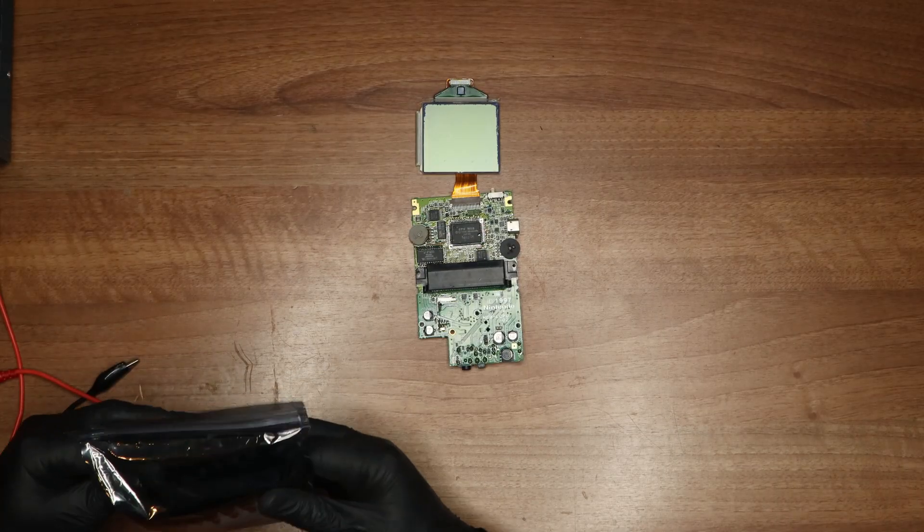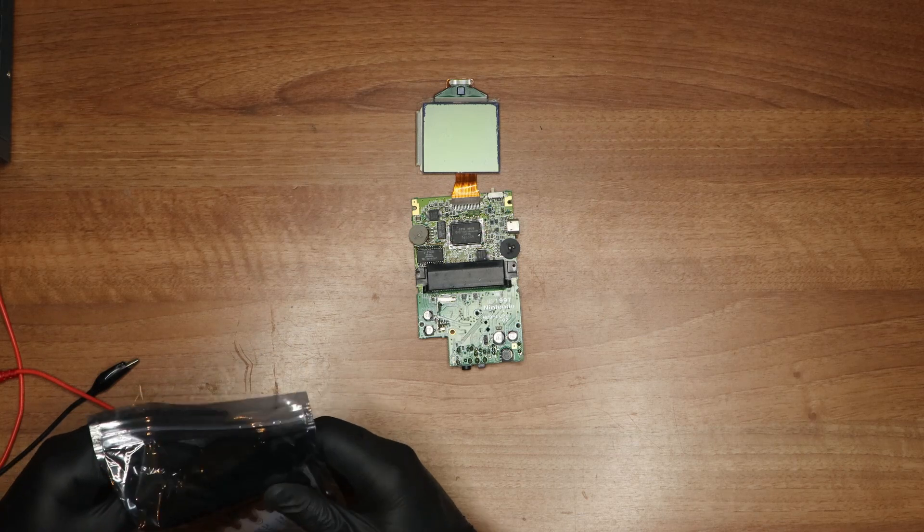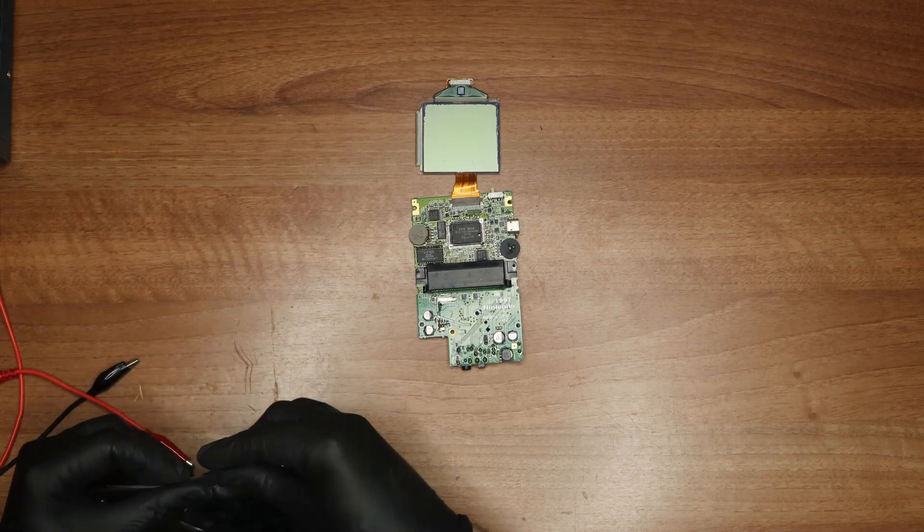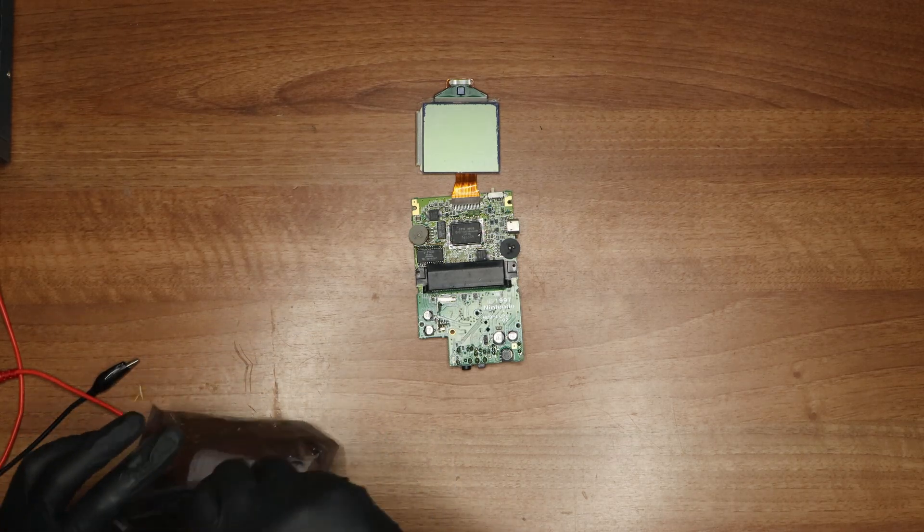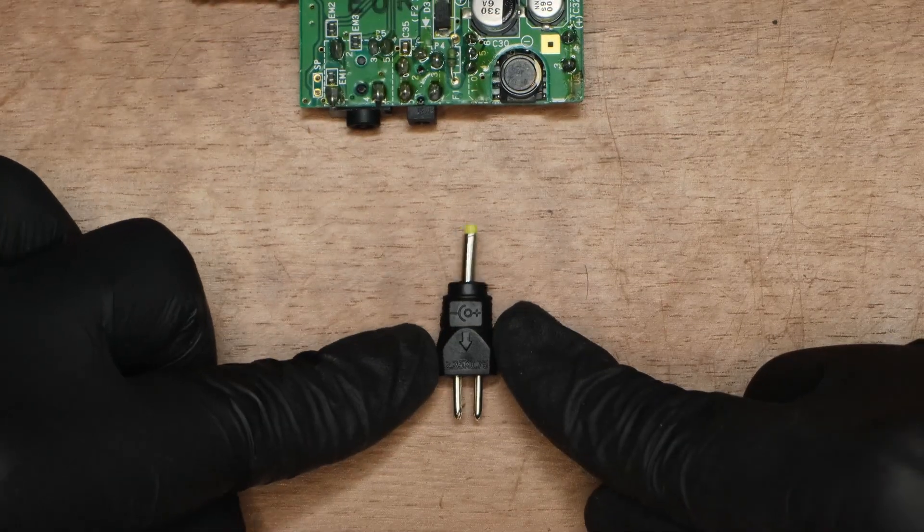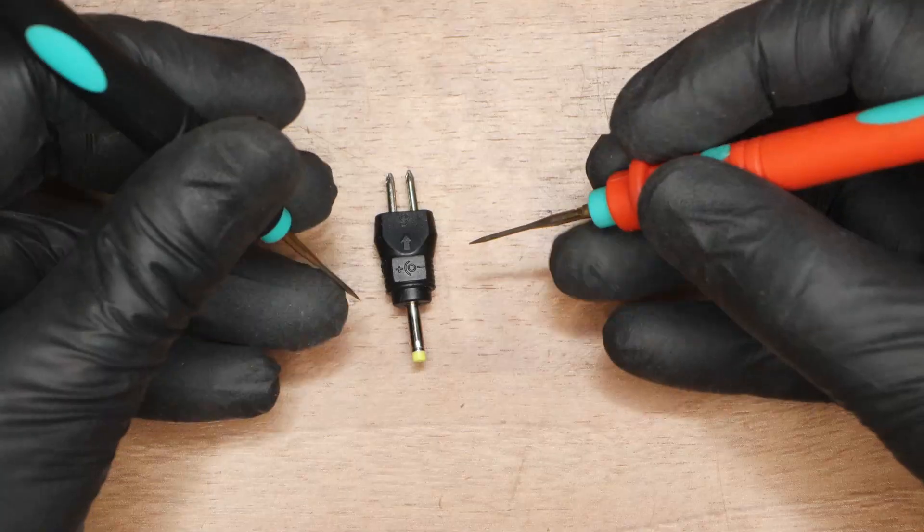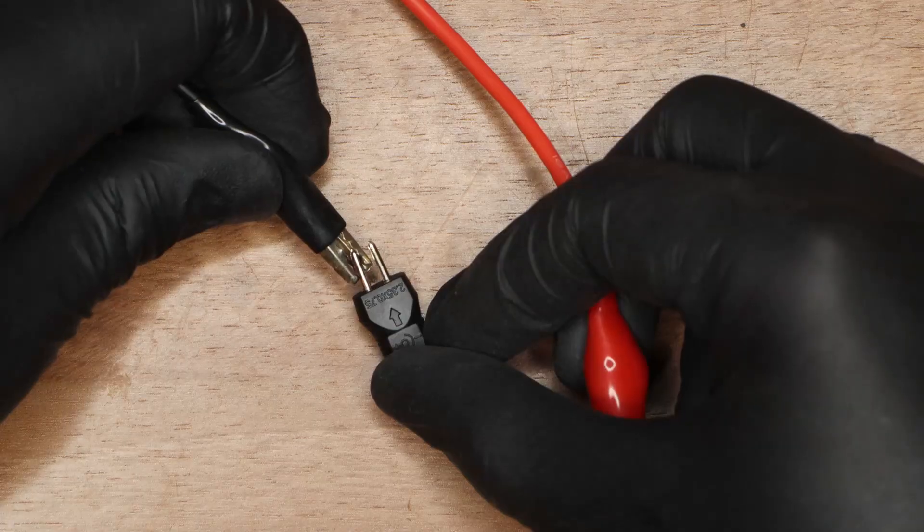One method involves finding a matching connector and wiring the power supply accordingly. However, this approach can be error prone, will ruin a good wire, and there's a risk of wiring it incorrectly. To avoid having to ruin any wires, I've acquired connectors from a universal power brick, and after determining the tip and sleeve, I wire them accordingly.